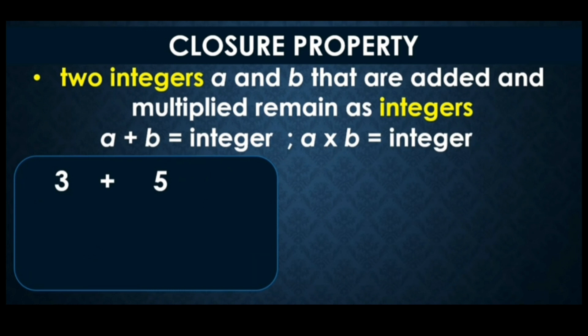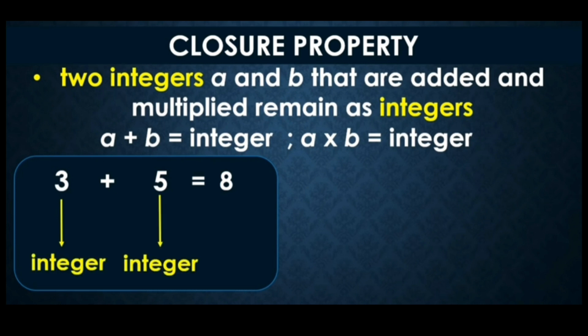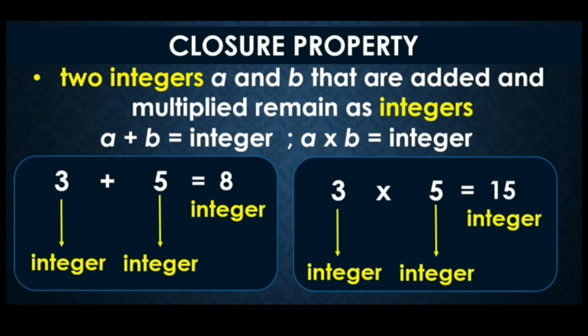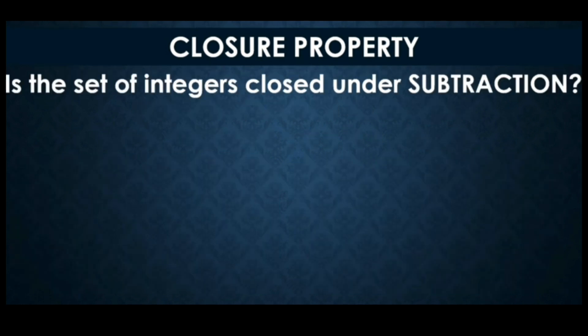For example, 3 plus 5 equals 8. 3 is an integer and 5 is also an integer, so the answer should be an integer. Similarly, 3 times 5 — 3 is an integer and 5 is also an integer, so the resulting product is an integer. When two integers are added or multiplied, the result will always be an integer.